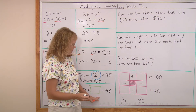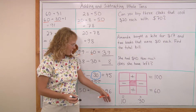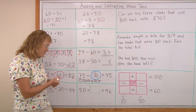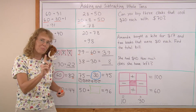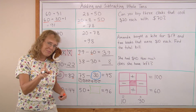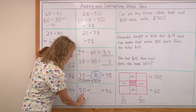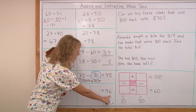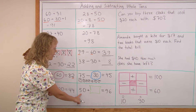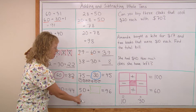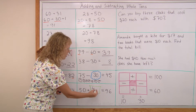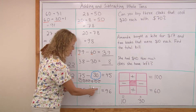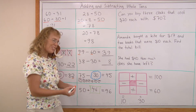Last one: 50 plus how many more makes 96? Matthew has an answer for us. Did you try to solve it too? There's 50 here; over here we have 9 tens and 6, and here we have 5 tens. So we need to add 4 tens to have 9 tens. And then we also need to add 6 ones: 46.